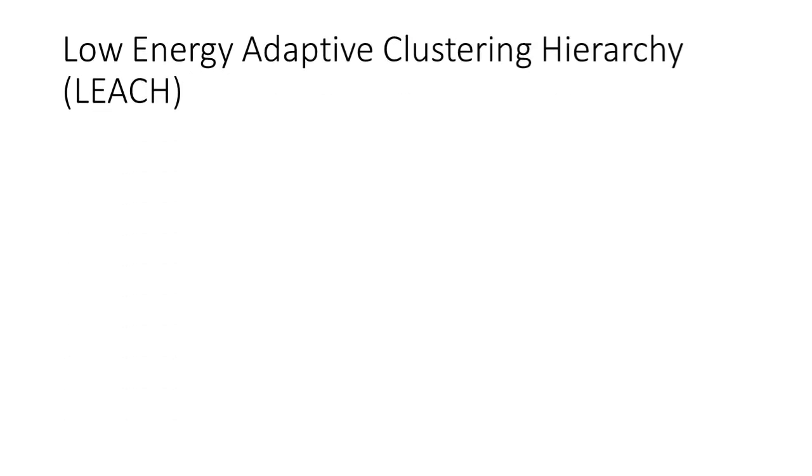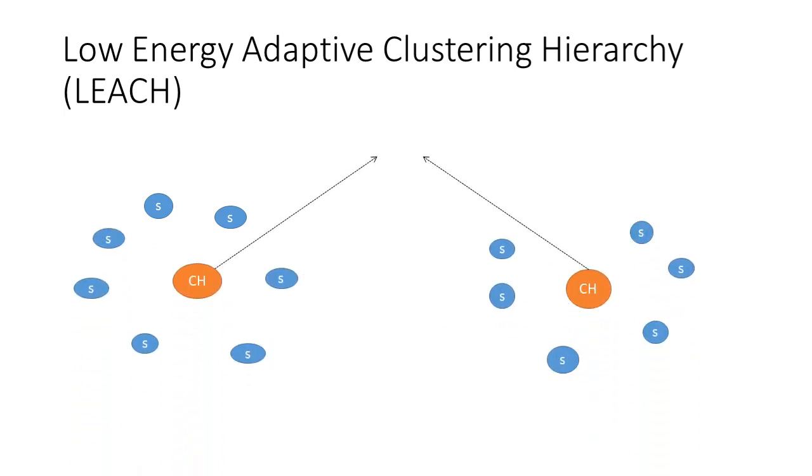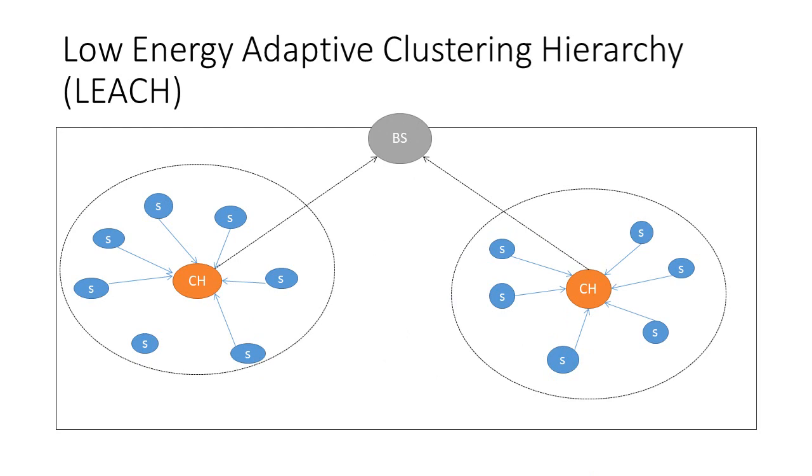The next protocol we will be discussing is the LEACH protocol. The main aim of this protocol is to improve the lifespan of wireless sensor networks by lowering the energy. LEACH randomly selects a few sensor nodes as cluster heads and eventually distributes energy dissipation amongst them. In this protocol, the cluster head sensor node compresses data arriving from sensor nodes that belong to the respective cluster and sends the aggregated packets to the base station in order to reduce the amount of information.